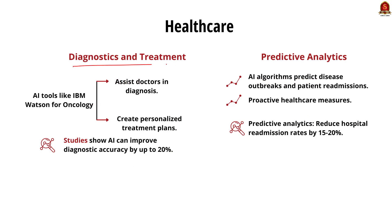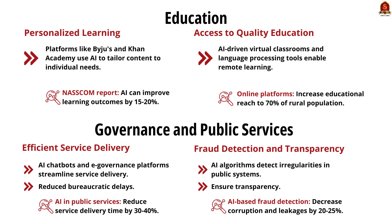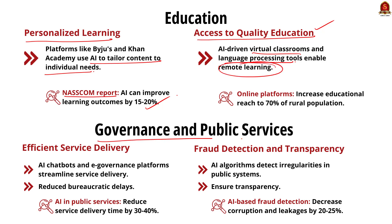In healthcare, AI tools like IBM Watson for Oncology assist doctors in diagnosing and creating personalized treatment plans. In education, personalized learning platforms like Khan Academy use AI to tailor educational content to individual learning pace and style. NASSCOM reports indicate AI in education can improve learning outcomes by 15 to 20%. AI-driven virtual classrooms and language processing tools enable remote learning especially in rural areas. In governance and public services, AI chatbots and e-governance platforms streamline public service delivery, reducing bureaucratic delays — implementation can reduce service delivery time by 30 to 40%. AI is also used in fraud detection and increasing transparency.